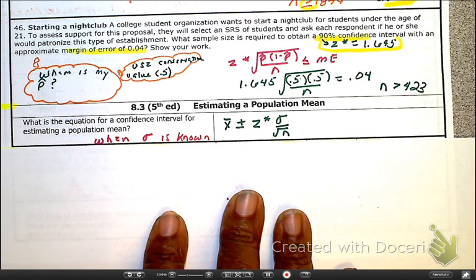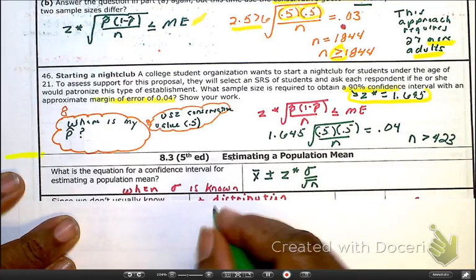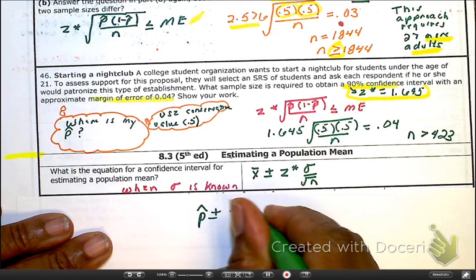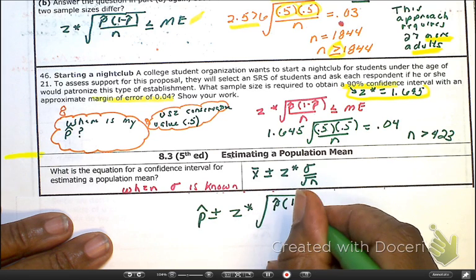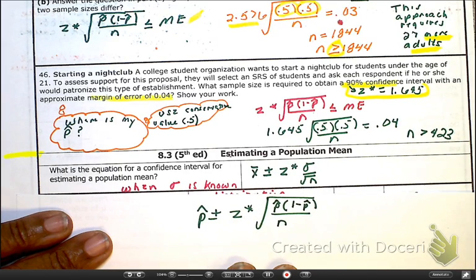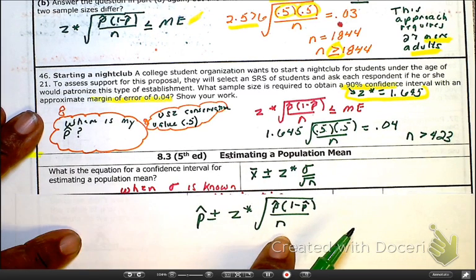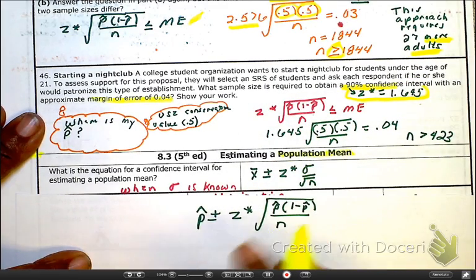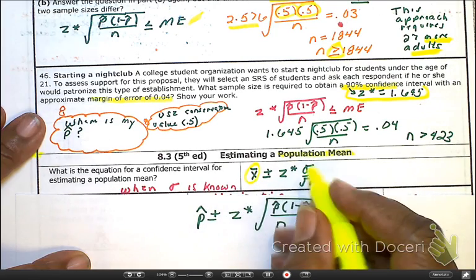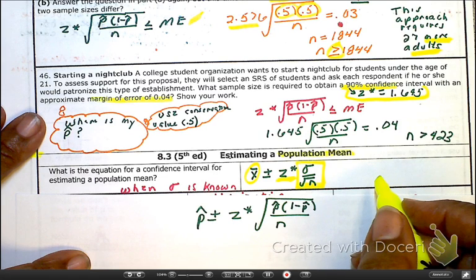So the question is, what equation do we use for the confidence interval when we estimate the mean? Because remember, we just came out of proportions in which we had to use formulas such as p hat plus or minus Z star and the square root of p hat times 1 minus p hat divided by n. That is our confidence interval when estimating a proportion. But now we are talking about estimating a population mean. So as you can see here, we have the formula in which, yes, this is still our point estimate, yes that is still our critical value, and yes that is the standard error, or also known by the standard deviation of the statistic.